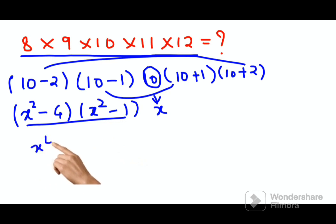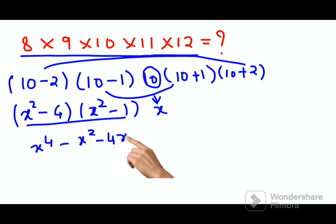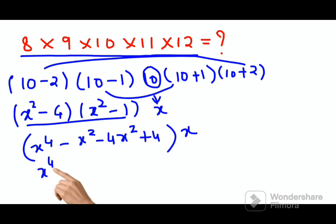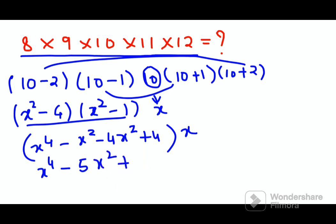When you multiply those brackets, you get x⁴ - x² - 4x² + 4, which simplifies to x⁴ - 5x² + 4, and everything is still getting multiplied by x. I'm keeping x outside to make the calculation easier.